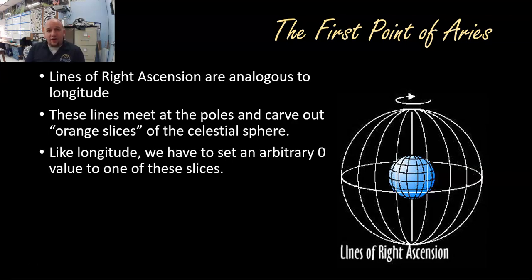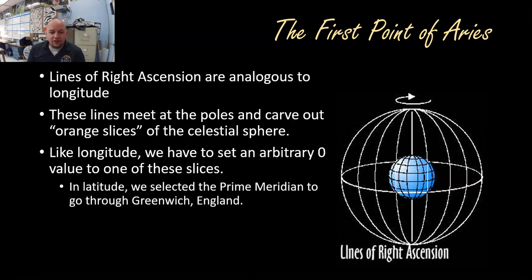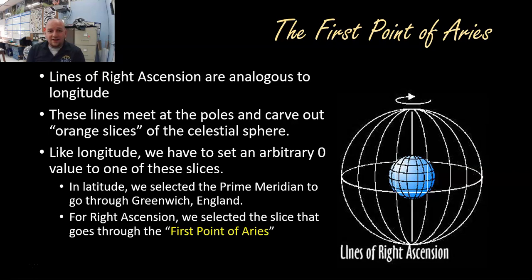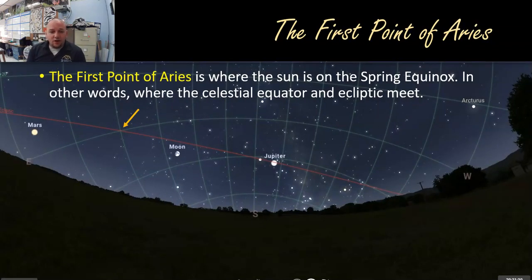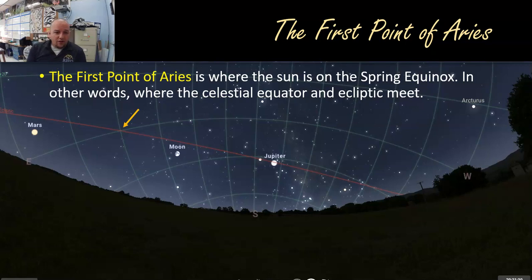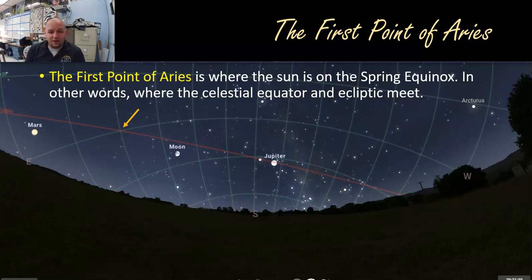Like longitude, we set an arbitrary zero and work around from there. In longitude, the zero line is set through the prime meridian in Greenwich, England. In right ascension, we select a line through the first point of Aries. We can't use Greenwich because the stars appear to spin around that point. The first point of Aries is the spot where the ecliptic passes through the celestial equator in the springtime — the position the Sun has on the spring equinox. It's not even actually in the constellation Aries due to precession and the wobble of the Earth, but that is our zero right ascension.